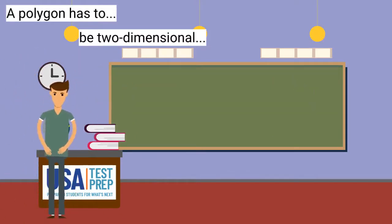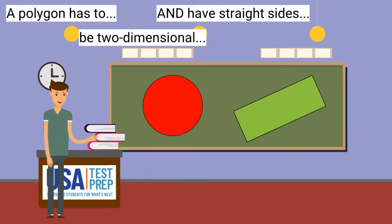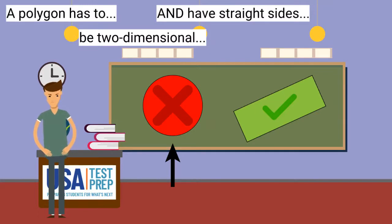A polygon also has to be made of straight sides. Look at these two figures. Which of these is a polygon because it has straight sides? This is a polygon because it has straight sides. The other shape is a circle. A circle is not a polygon because it has curved sides.